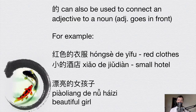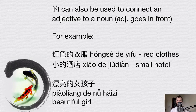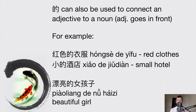的 can also connect an adjective to a noun, with the adjective going in front — the same word order as English. It's often used with two-character adjectives; if both the adjective and noun are single characters you may not need 的. For example: 红色的衣服 connects 红色 ('red') with 衣服 ('clothes'), meaning 'red clothes.' Another example: 小的酒店 — 小 means 'small,' 酒店 means 'hotel,' so 小的酒店 means 'a small hotel.' And 漂亮的女孩子 — 漂亮 means 'beautiful,' 女孩子 means 'girl,' so it means 'a beautiful girl.'